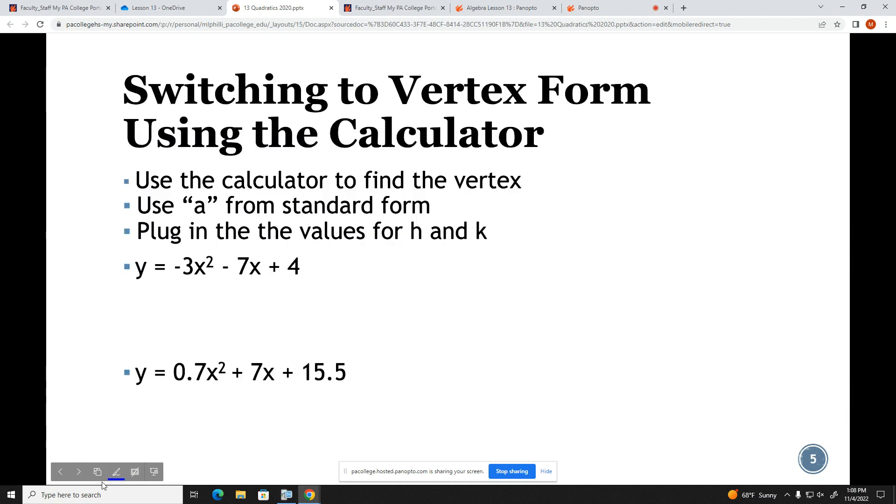And if we have a negative a value like we did in the second one, that will give us something that is concave down, which is that n shape. So if I know the vertex and I know the concavity, I can very quickly create a sketch and I can envision a sketch without having to actually graph the problem. But for these problems, we are going to use the graphing calculator. And our goal is to switch to vertex form. Our procedure is to use the calculator to find the vertex, use the a from the standard form, and then plug in the correct values for h and k.